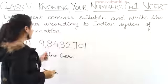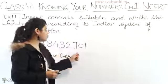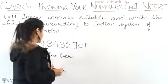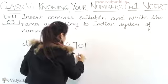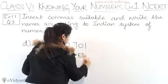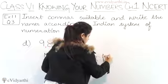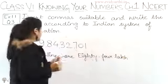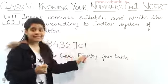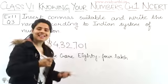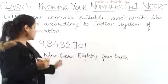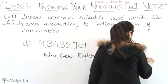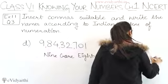Then we have 84. After 84, there are five digits - five digits comes in lakh. So 9 crore 84 lakh. Next we have 32. After 32 there are three digits - three digits comes in thousands. So 9 crore 84 lakh 32 thousand.